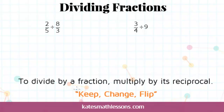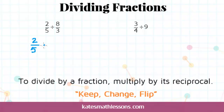What you're going to do is keep the first fraction the same, so in this problem the 2/5 is going to stay the same. This is your starting amount, so you don't change that number. Next, you're going to change it from division to a multiplication problem. So change this division sign to a multiplication sign, and then you're going to flip the second fraction over.